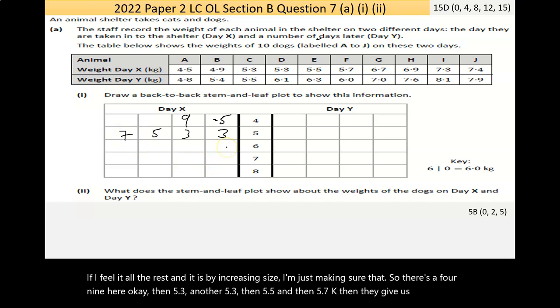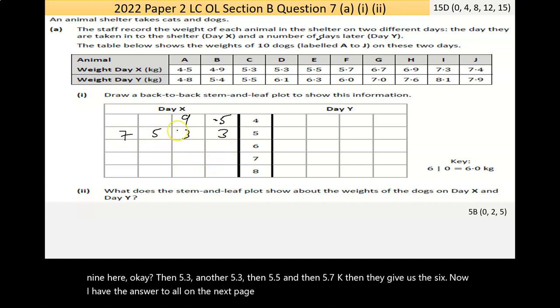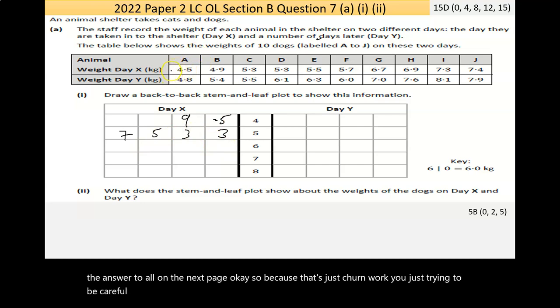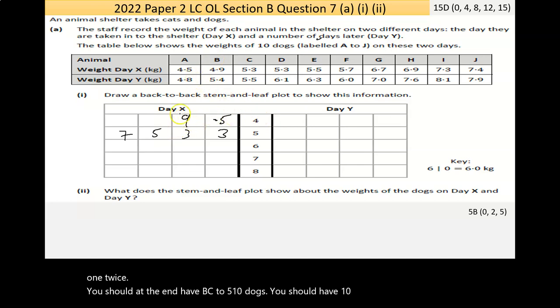Now, if I fill in all the rest, and it is by increasing size, I'm just making sure of that. So there's a 4, 9 here. Then a 5.3, another 5.3, then a 5.5, and then a 5.7. Then they gave us the 6. Now, I have the answer done on the next page. That's just churn work. You're just trying to be careful. Maybe put a tick beside each one as you've done them, just so you don't duplicate one twice.